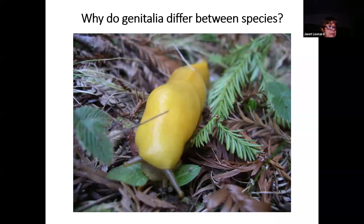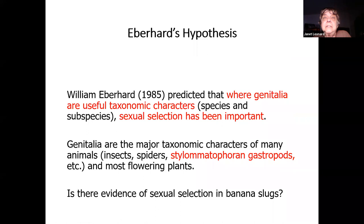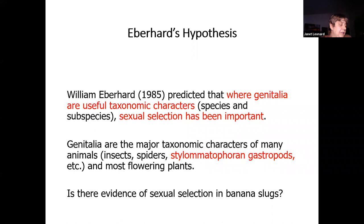We can distinguish between species on the basis of genitalia, and the question becomes why do the genitalia differ? In 1985, an arthropod biologist who works with insects and spiders named William Eberhard predicted that where genitalia are useful taxonomic characters — distinguishing characteristics for species and subspecies — sexual selection has been important. This is true: genitalia are major taxonomic characters of many animals, including his insects and spiders, all of the Stylommatophoran gastropods, some rodents, and most flowering plants, which are distinguished on the basis of flower characteristics — which are genitalia.